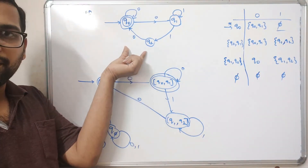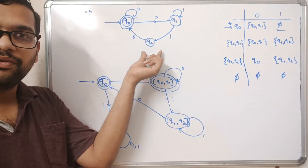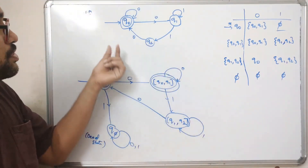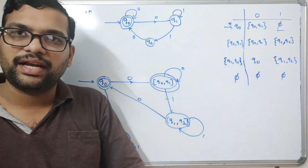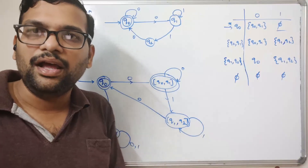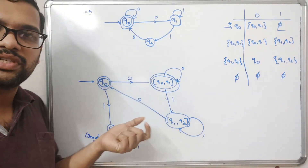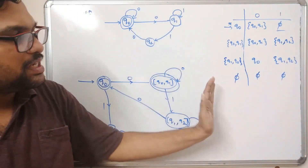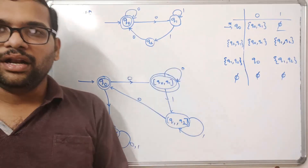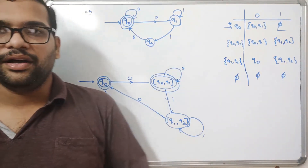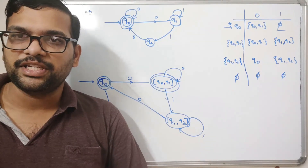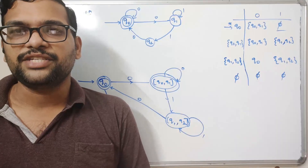Follow this procedure to find the DFA for an NFA: start with the initial state, find transitions over each input symbol, identify new states, and repeat until no new states appear. This is the complete transition table and the equivalent DFA for the given NFA. If you have any doubts, post them in the comment section and I'll clarify. If you enjoyed this session, please like, share, and subscribe to our channel. Thanks for watching.